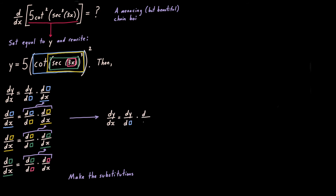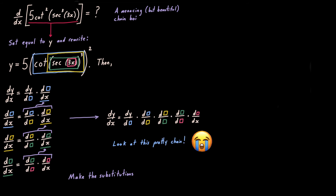We can condense all this information into one nice string: dy over dx is dy over d-blue, times d-blue over d-yellow, times d-yellow over d-green, times d-green over d-pink, times d-pink over dx. You can imagine those pairs of similar colors canceling each other out. Look at this pretty chain! If we can find those five derivatives and multiply them together, we're pretty much done.